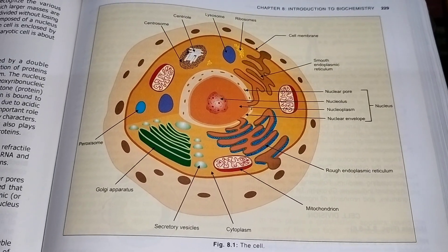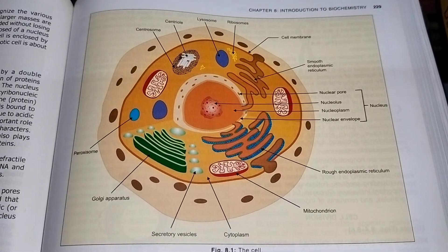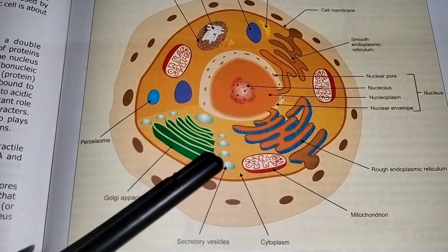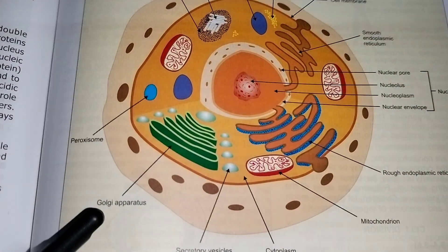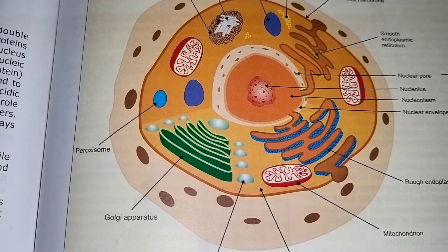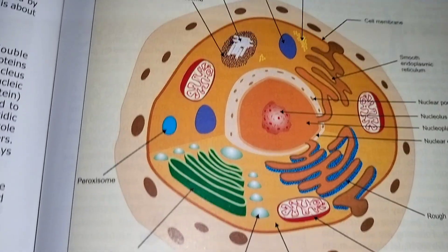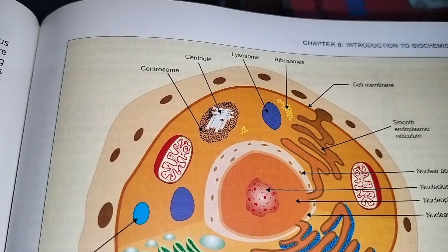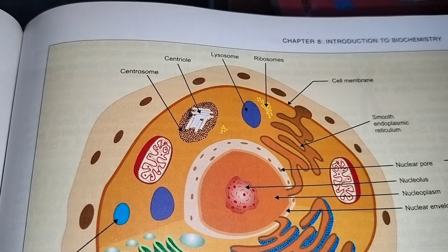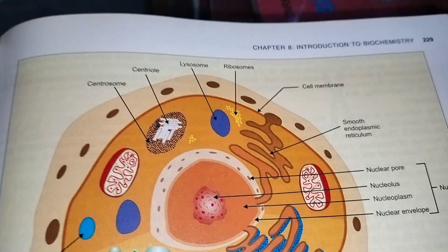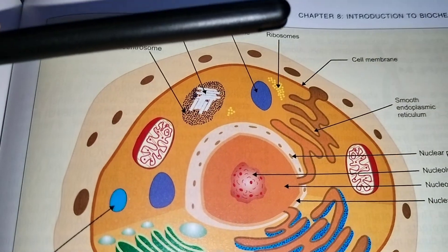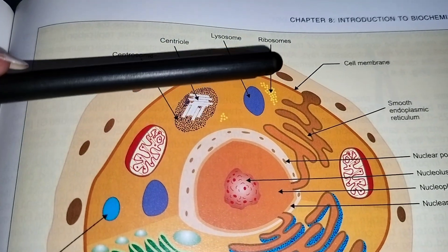Here's the picture of the cell — this is called the apparatus. There are obviously some centrosome, centriole, lysosome, ribosomes, and cell membrane.